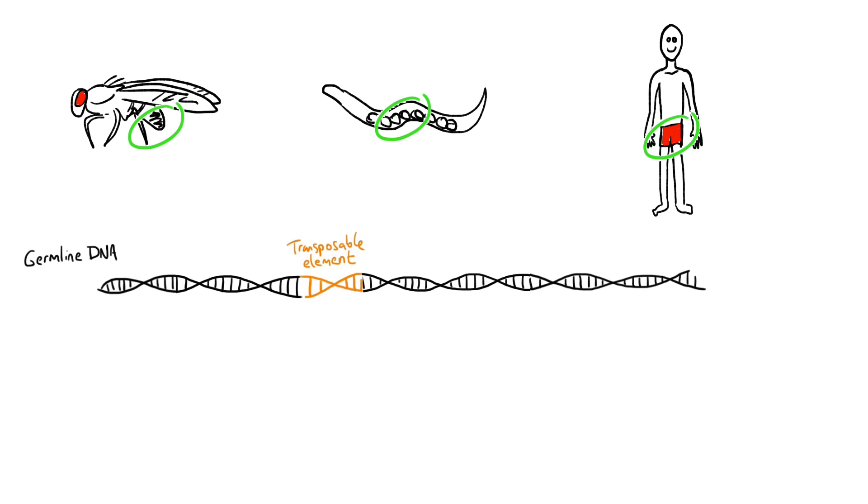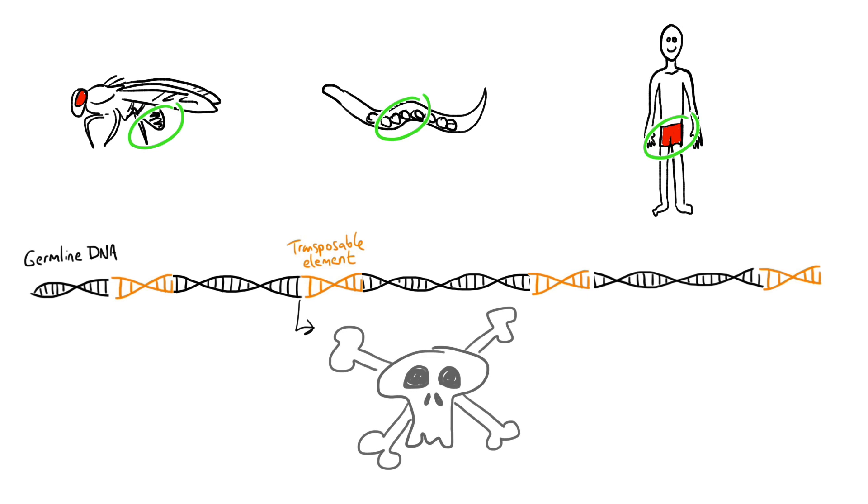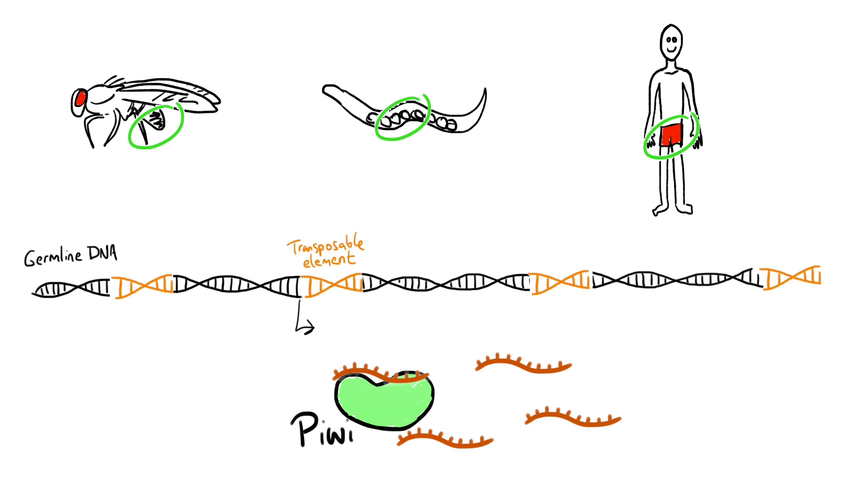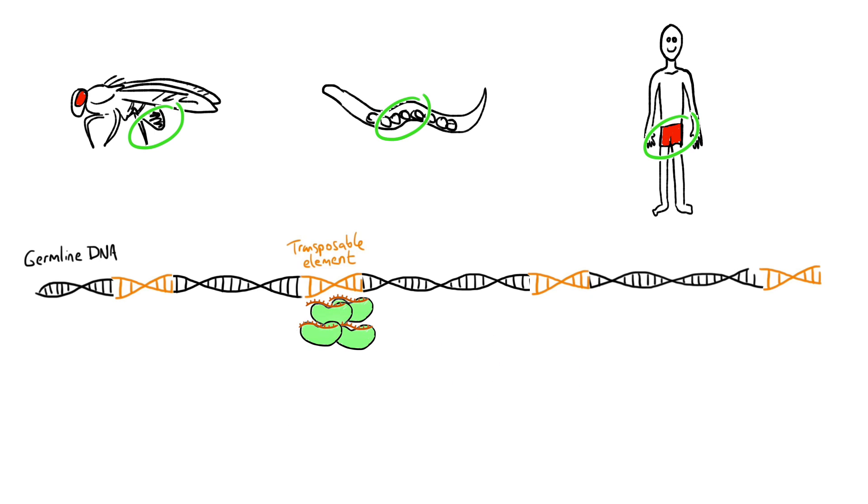If left unchecked, transposable elements may replicate and reinsert themselves into random places in the genome, with disastrous consequences for the organism. In animals, small RNAs named piRNAs, because of their association with proteins called peewees, target transposons for silencing and thus protect the germline.